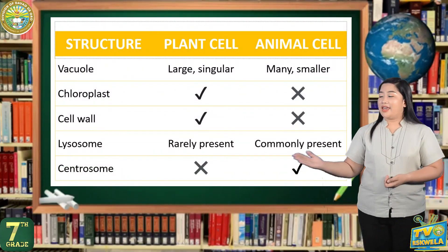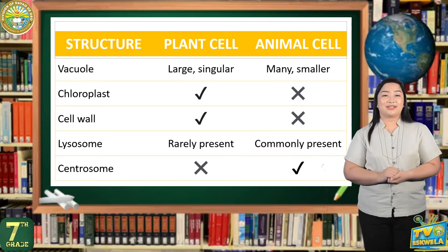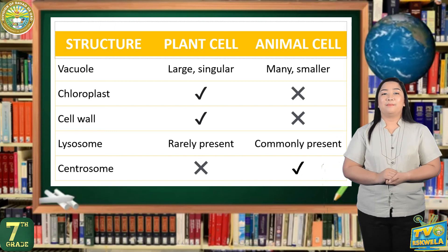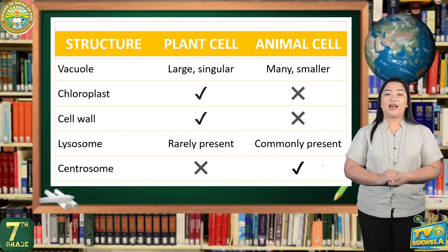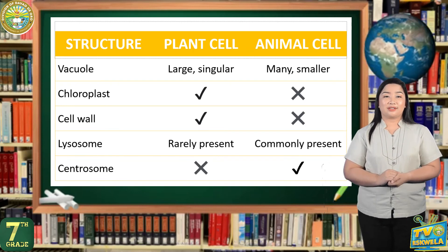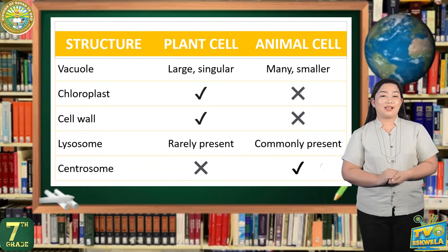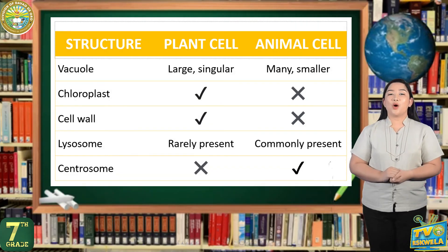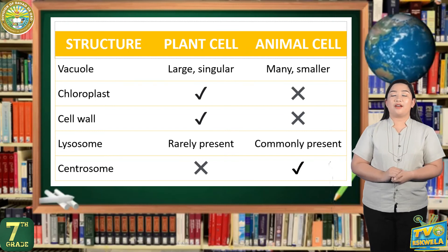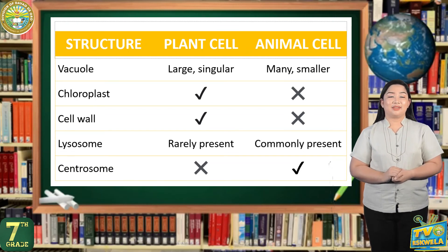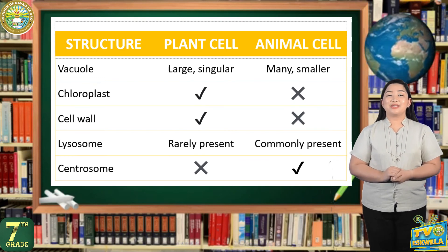Here is the table comparing the structures found in plant and animal cells. Plant cells have a large singular vacuole, while animal cells have many smaller vacuoles. Plant cells have chloroplasts and a cell wall, while animal cells do not. Lysosomes are rarely present in plant cells but are present in almost every animal cell. And lastly, animal cells have a centrosome, while plant cells do not.